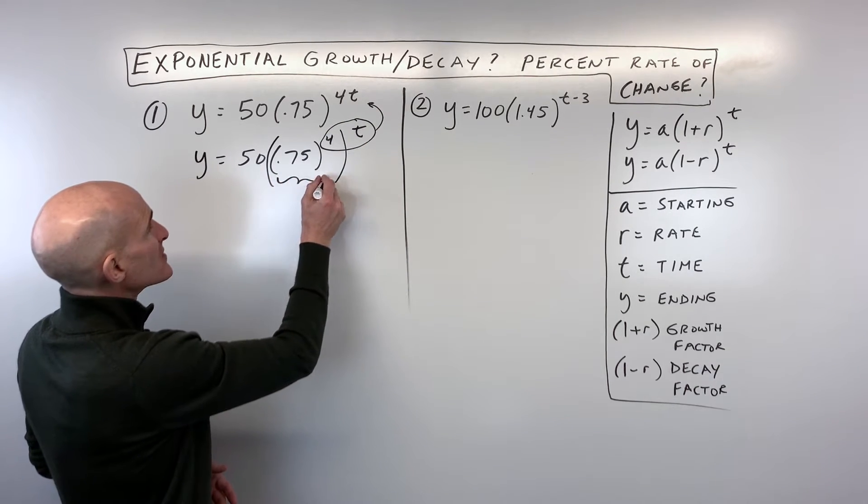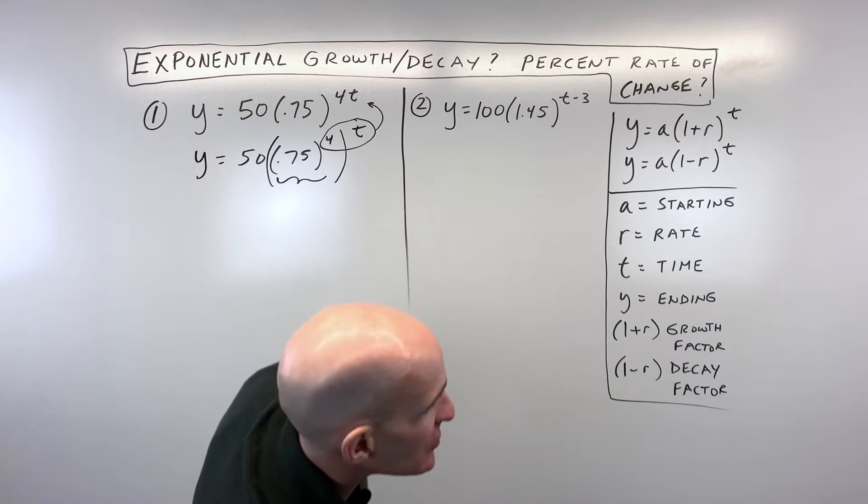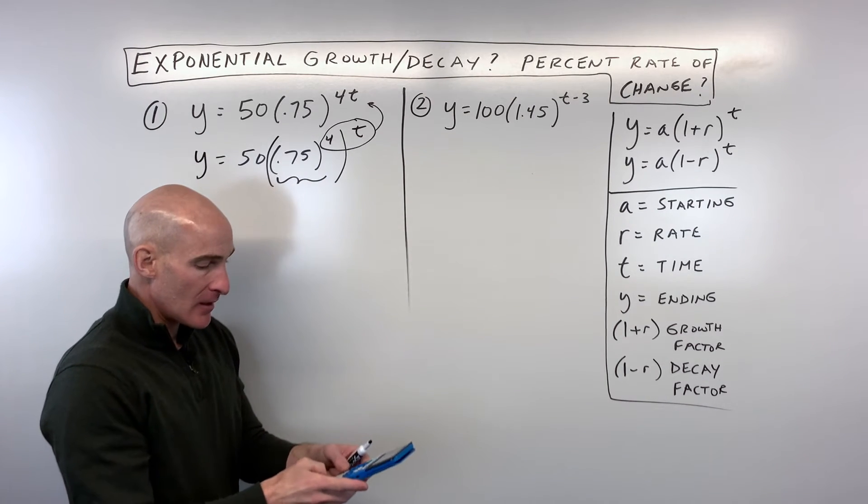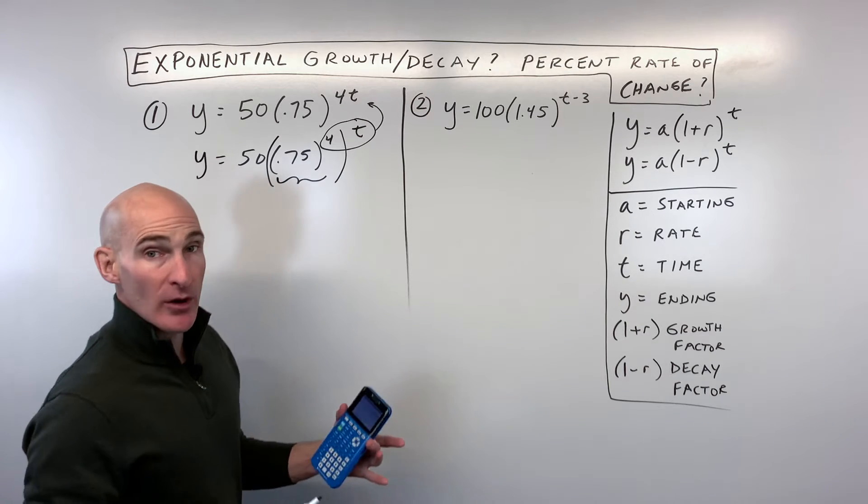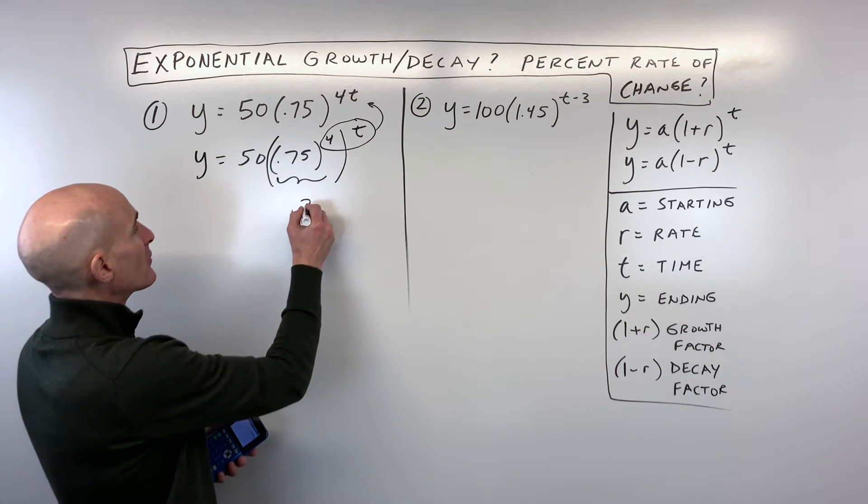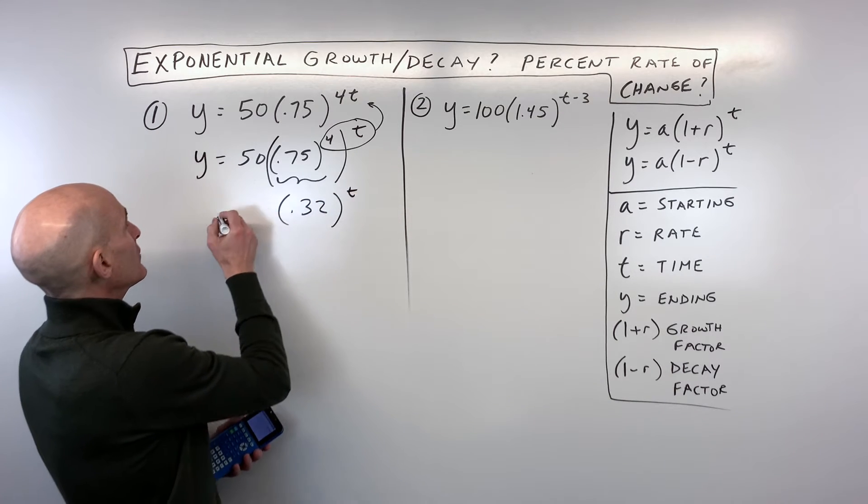But now what I'm going to do is I'm going to figure out what is this 0.75 to the 4th power. So let's go ahead and do that in the calculator, 0.75 to the 4th, I'm getting 0.32, I'm rounding a little bit here, so this is 0.32, check my work if you'd like.